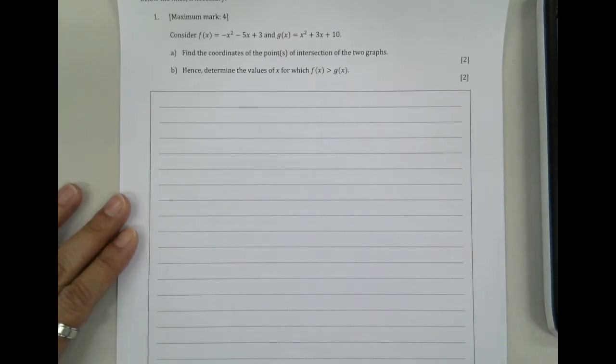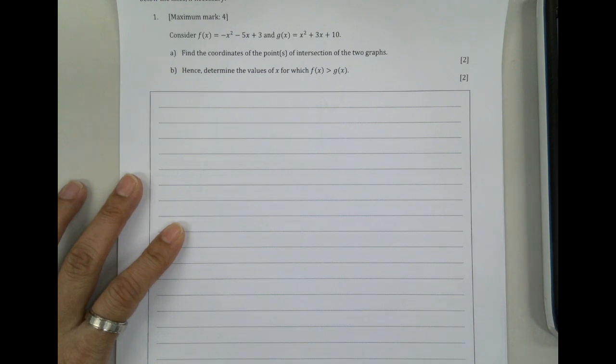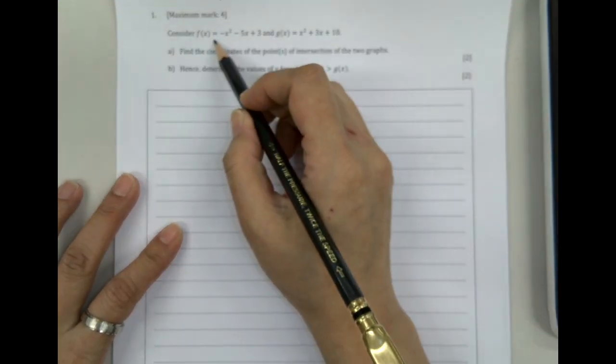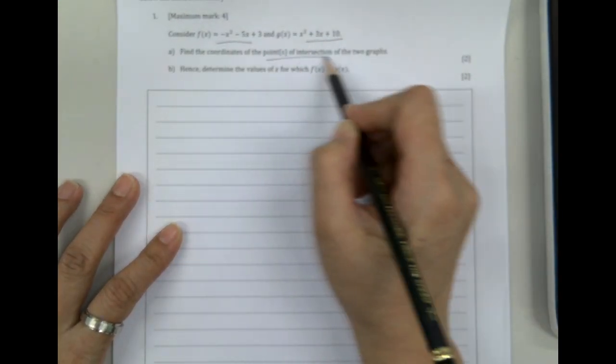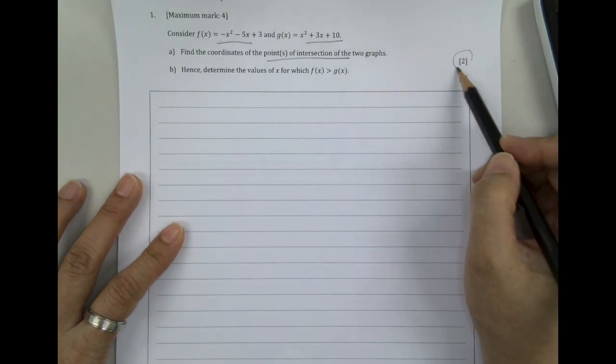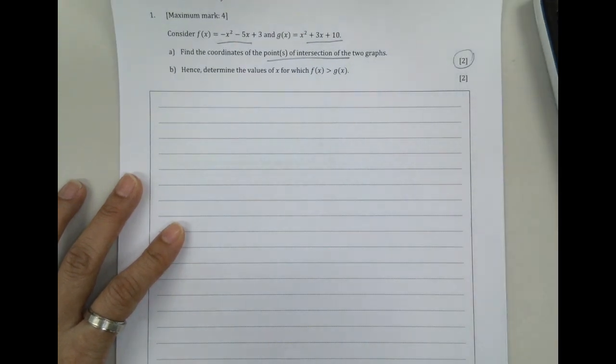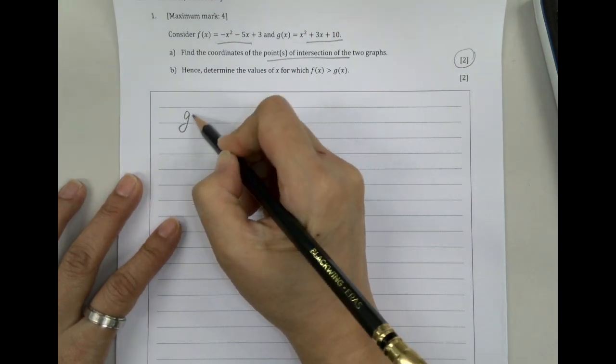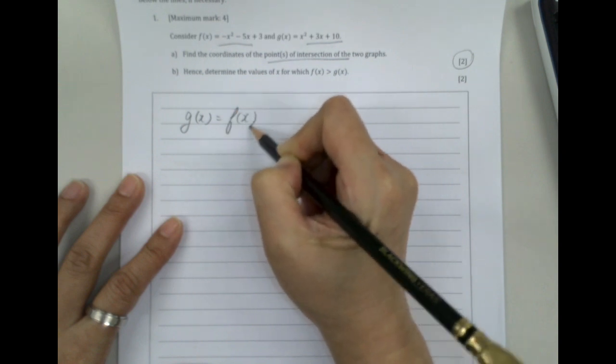So here comes our GDC section. We know that we have considered the two functions there. We want the intersecting point. With that working there, we need only two points. So in a calculator question, what we need to do is you can either just sketch, write down fx equals to gx, and then we use the GDC.